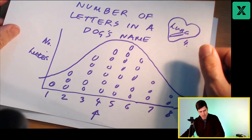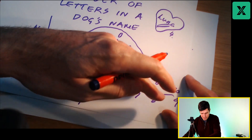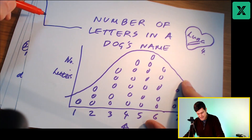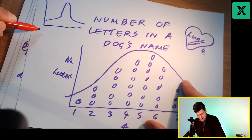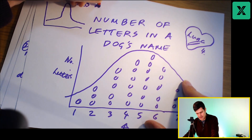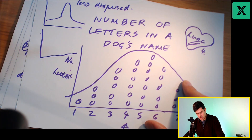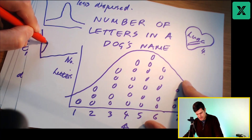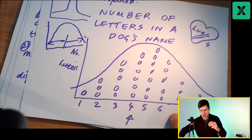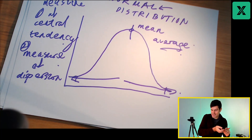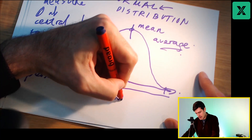What do we mean by dispersion? Going back to the dog example — how spread out is the data? The data might be less dispersed and look more like this, or it might be more dispersed and look something like this — we can see how the data is more spread out. So what is the statistical measure for dispersion? Two ideas: variance and standard deviation. Variance and standard deviation — specifically we are interested in standard deviation here.